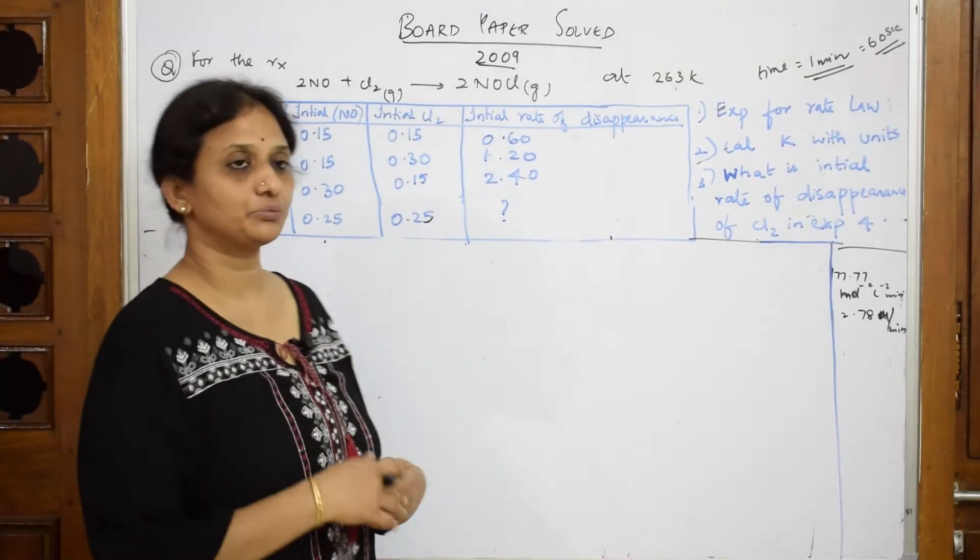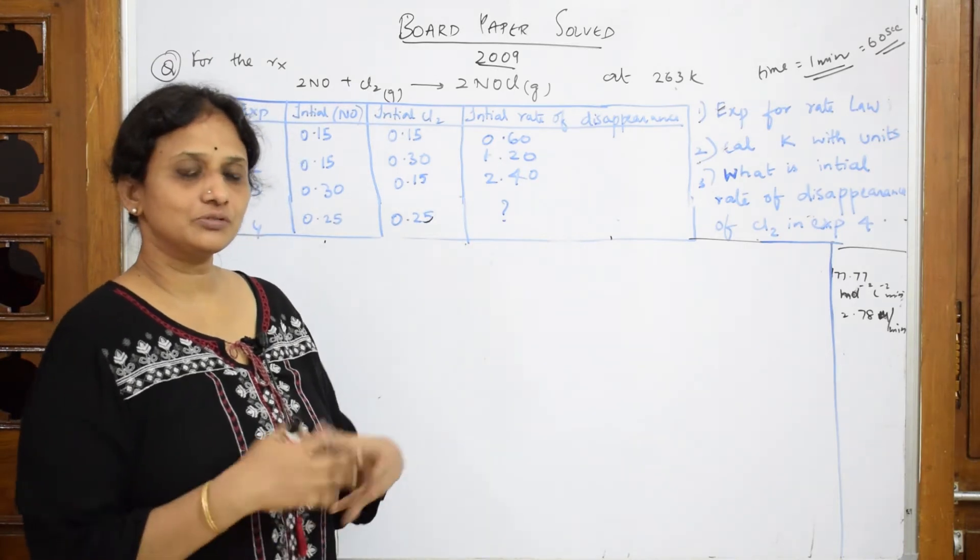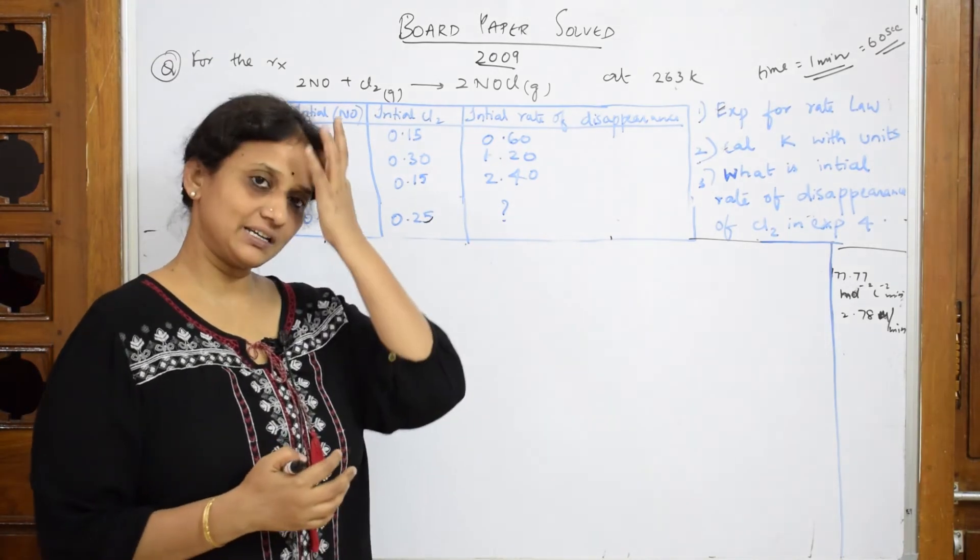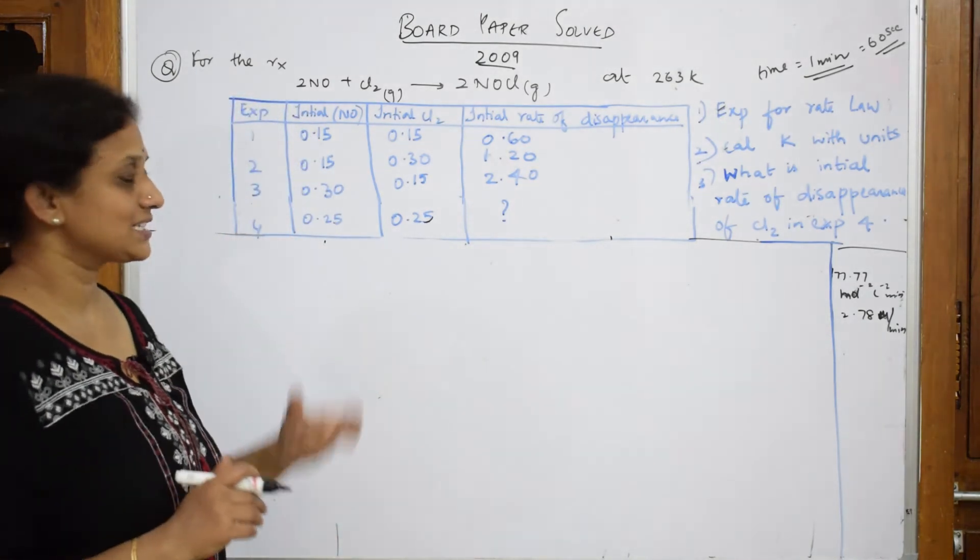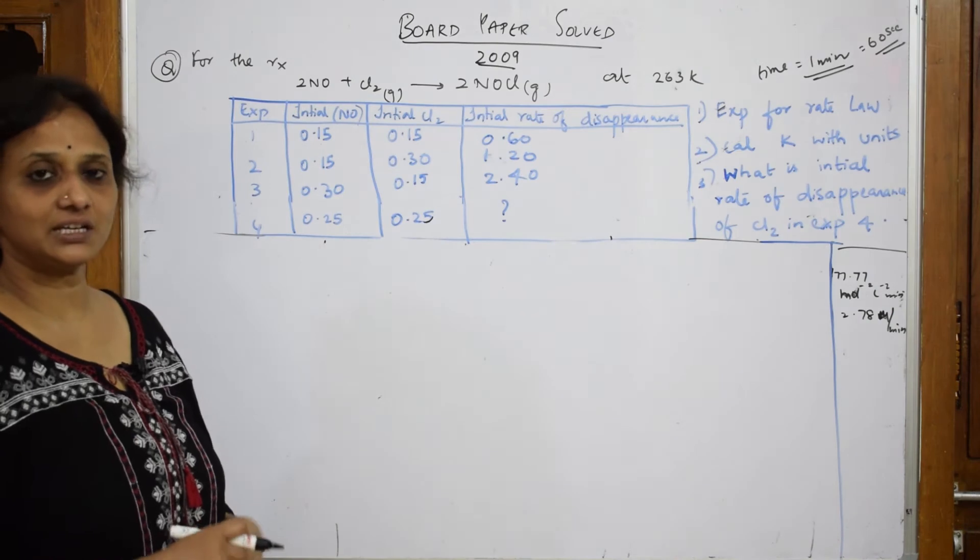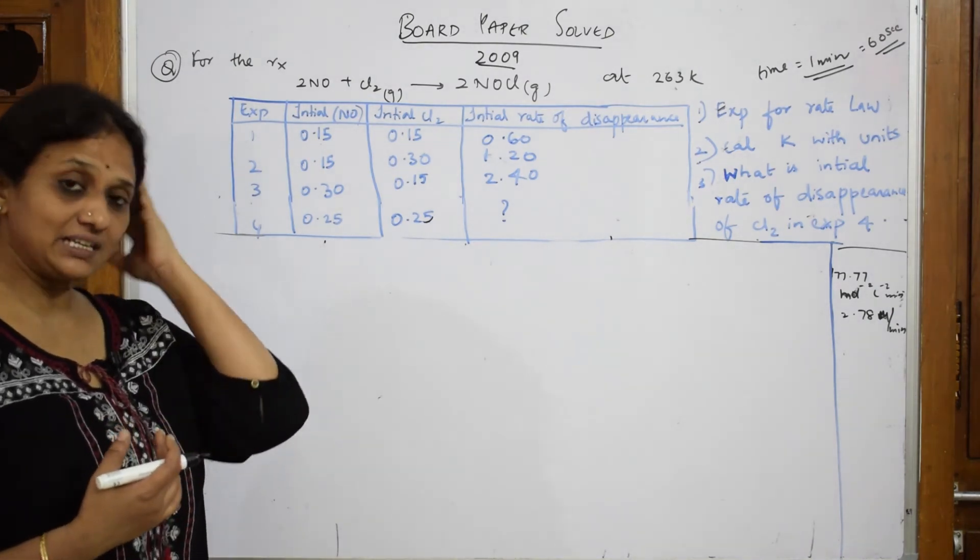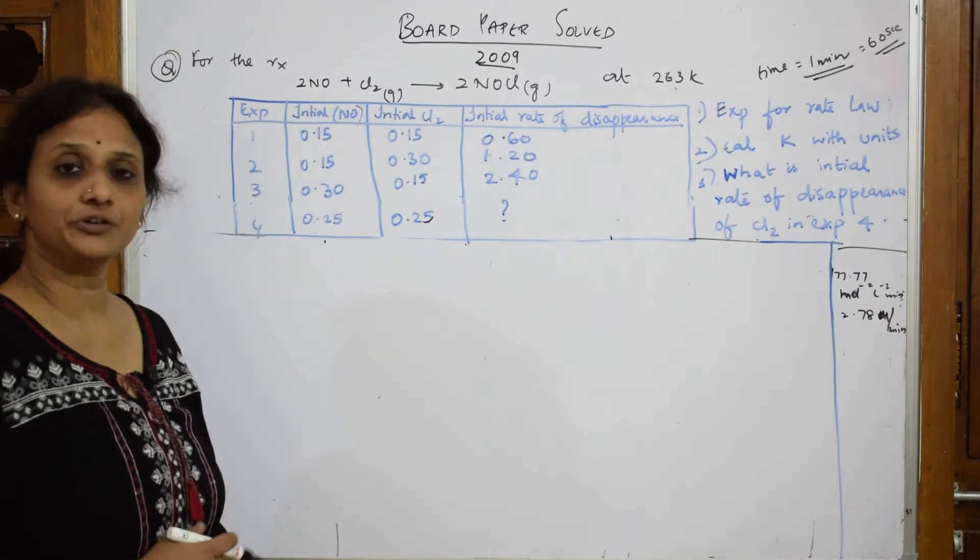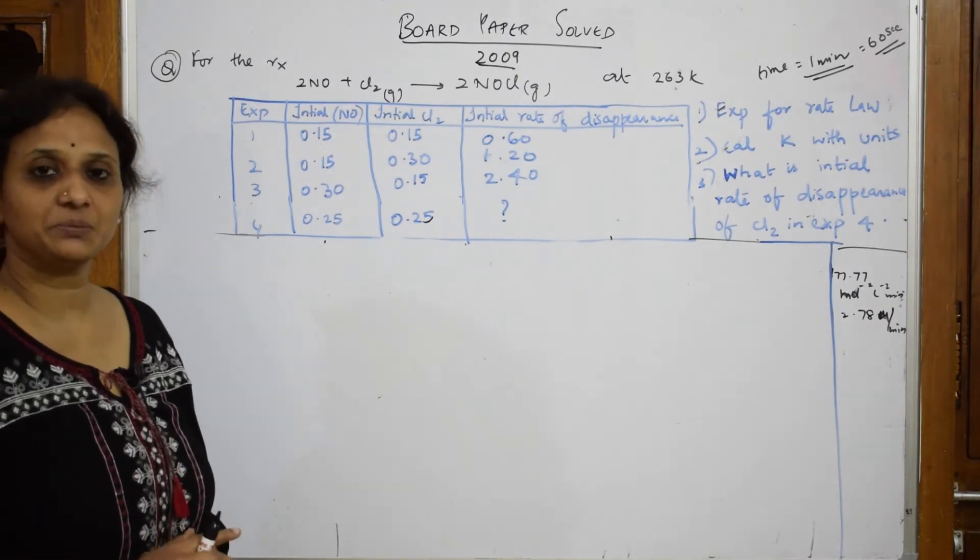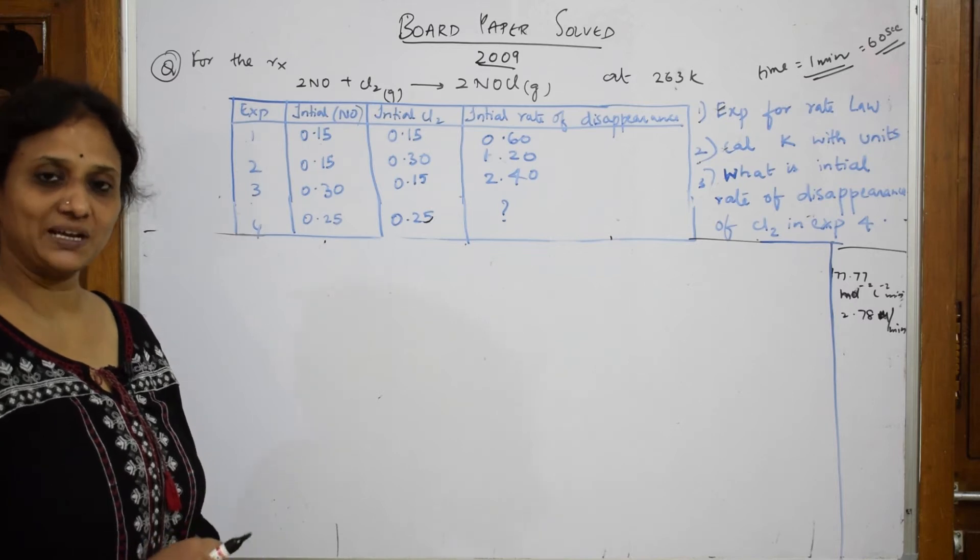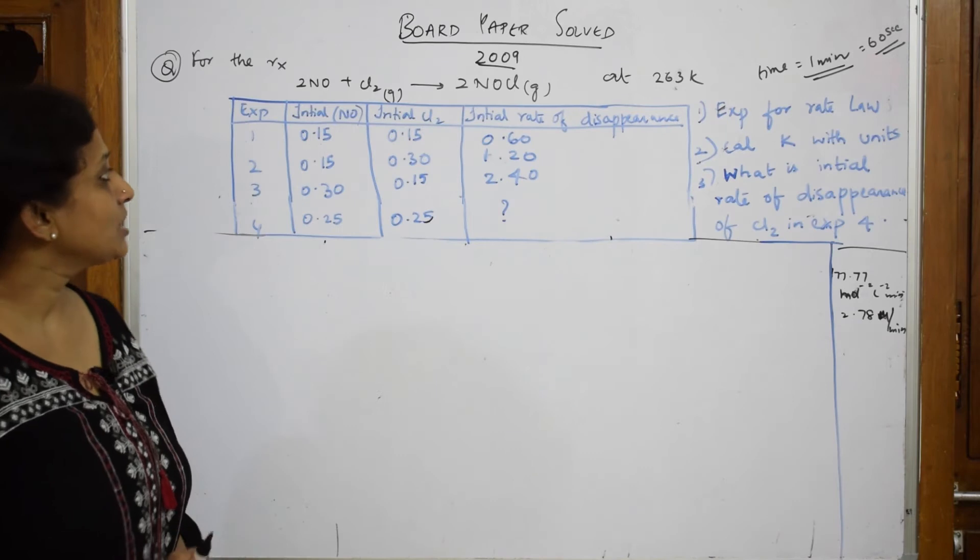Let us come back and do this equation of 2009. Basically, almost all the chemical kinetics numericals are based on the tabulated column only. Let us read the equation. Do it carefully. Almost all the numericals related, I have done a question on this also. Please go to the playlist where I have done one more numerical of the same sort, but let us do this numerical.